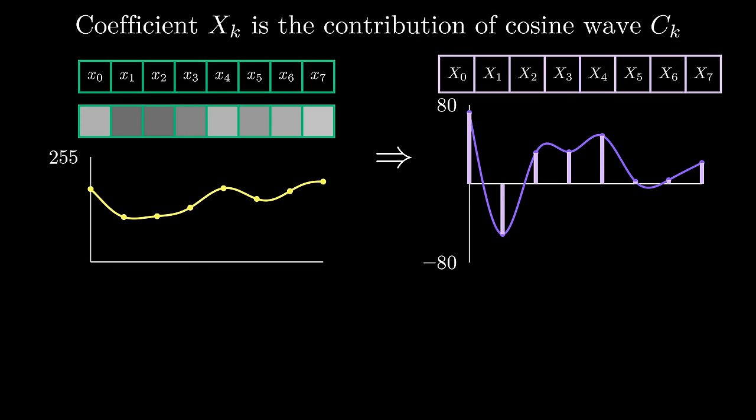Fun fact: the original discovery of the DCT centered around approximating other transforms that had better energy compaction properties but were too expensive to carry out. The DCT is just one example of a transform that has this property for real world images, and we use it because it's quite easy to compute.